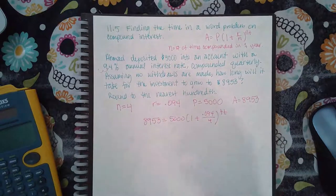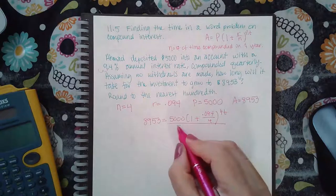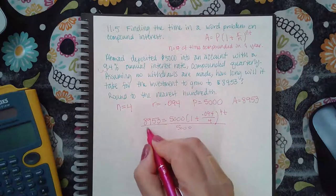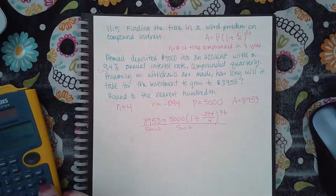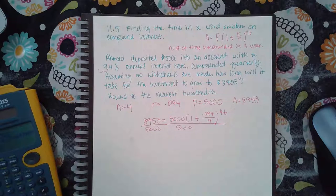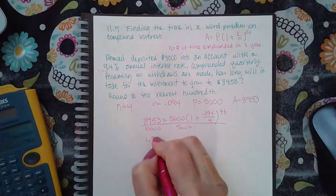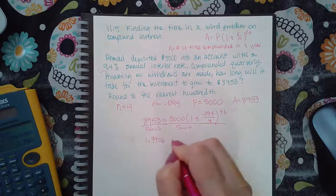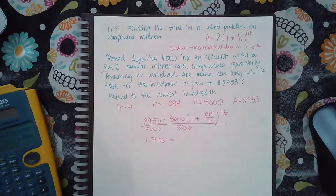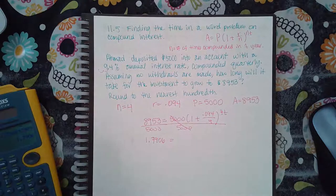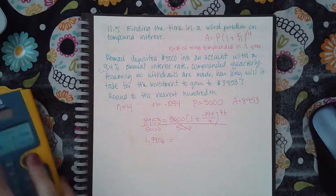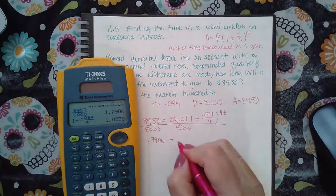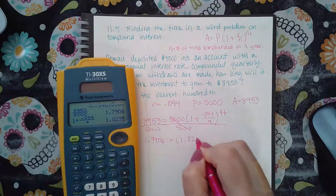So then now what we're going to do is divide both sides by 5,000. Let me see, 8,953 divided by 5,000 is 1.7906. 1 plus 0.094 over 4 is actually equal to 1.0235.